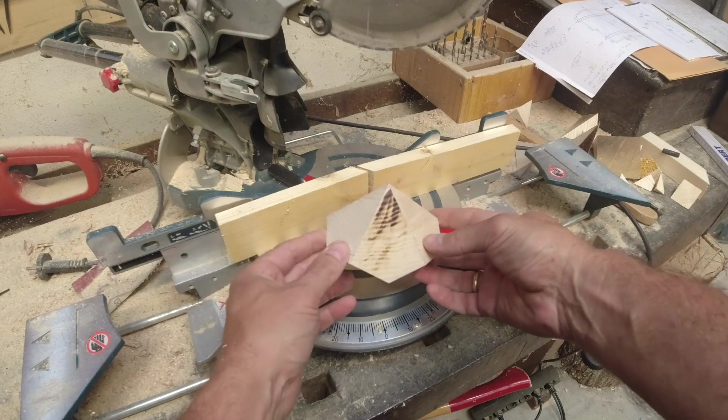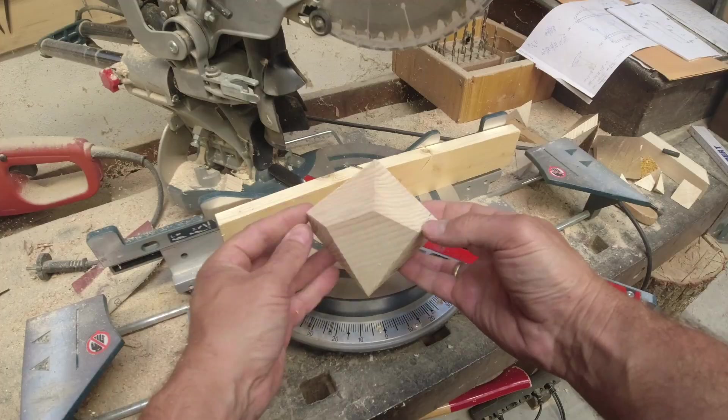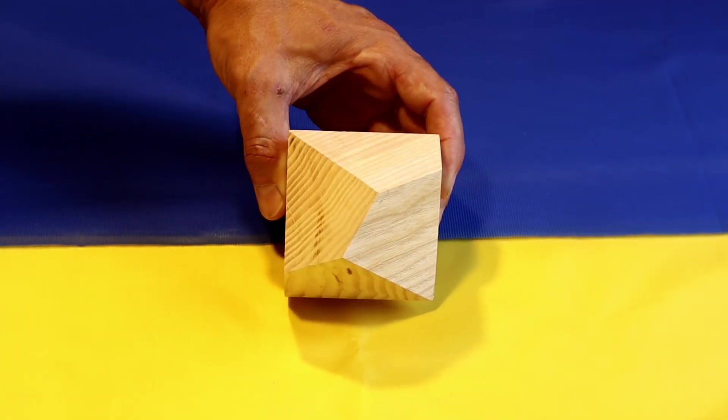With a bit of sanding, the polyhedron was finished. In the end, it was exactly the shape I wanted with all the features described earlier.